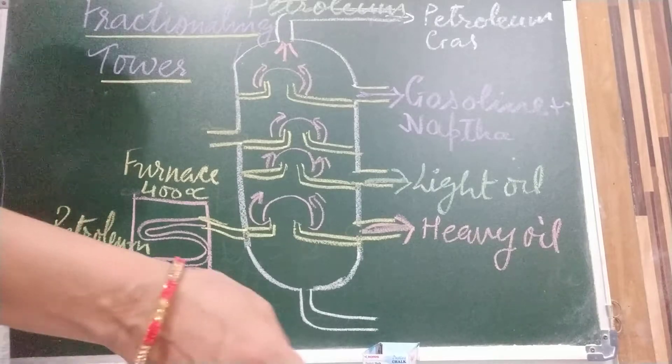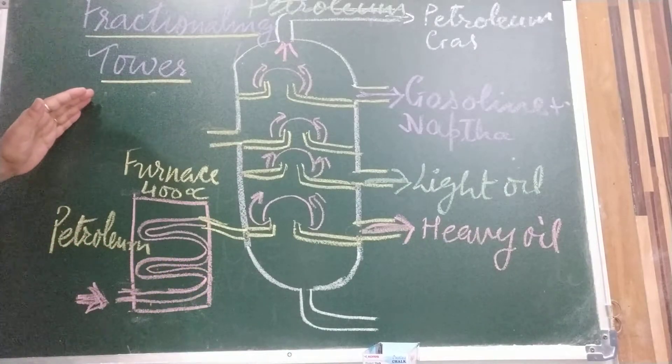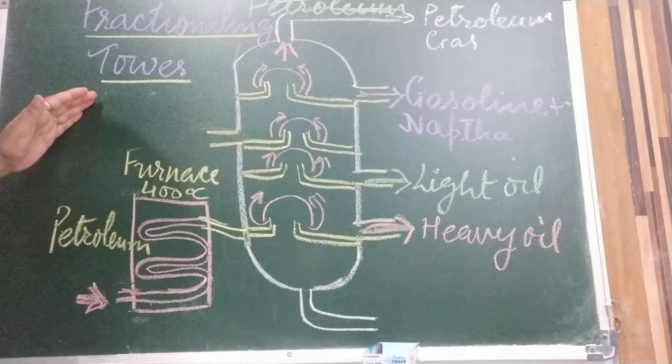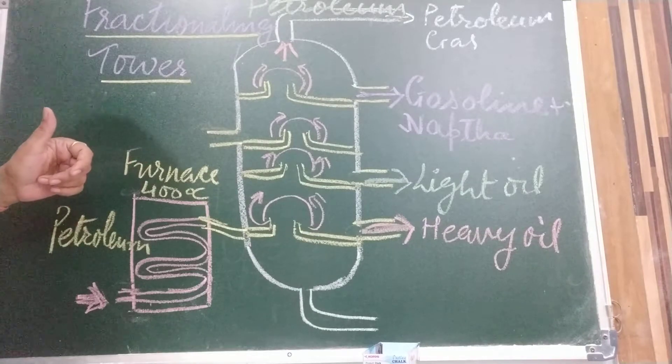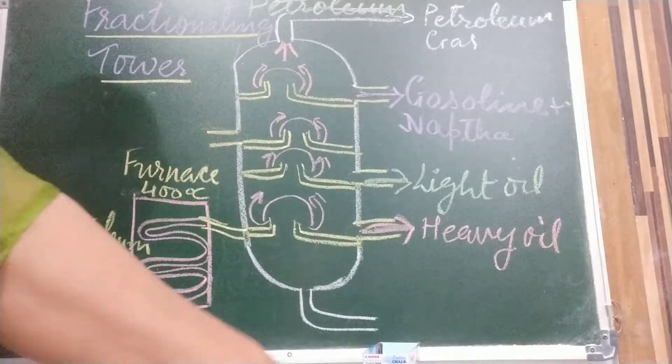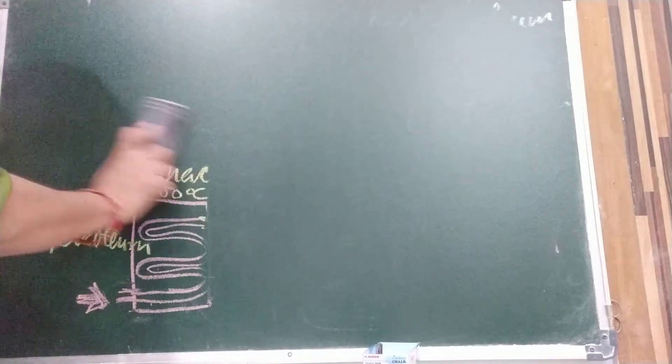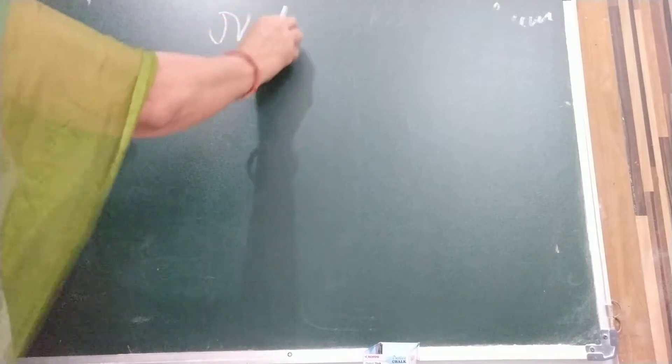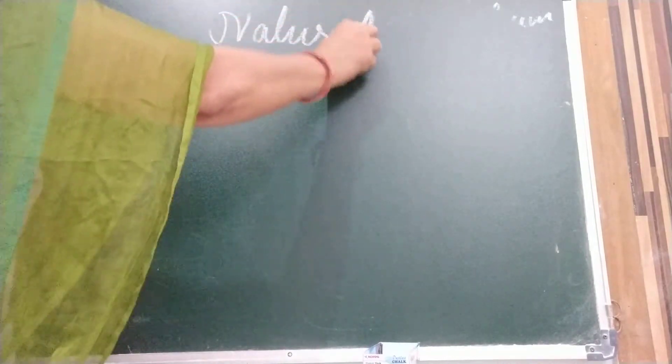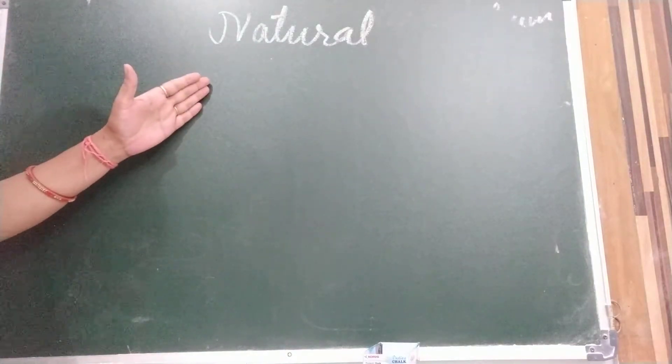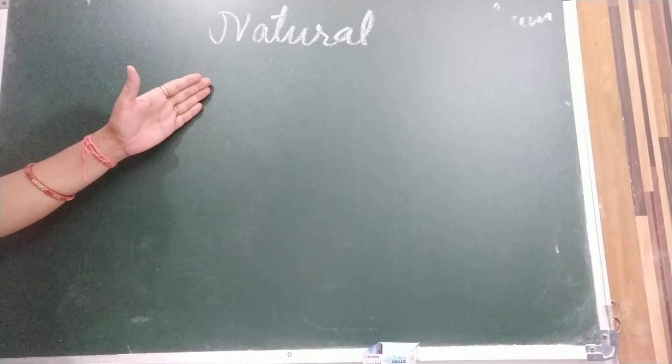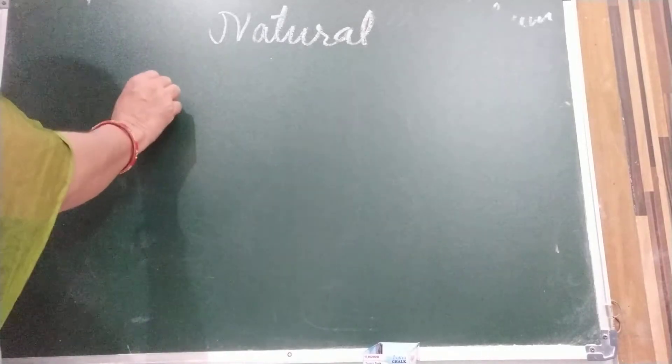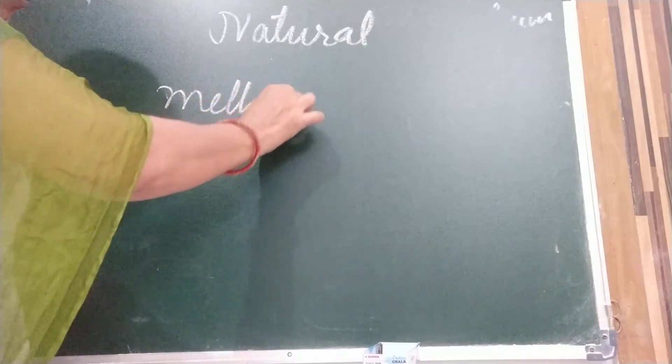Come to the natural gas. Natural gas is found along with petroleum in reservoir under the ground. It is chiefly made up of methane. Now I am going to tell you how natural gas is. Along with petroleum we get it. Natural gas is found along with petroleum in reservoirs under the ground. It is chiefly made up of methane, propane, butane.